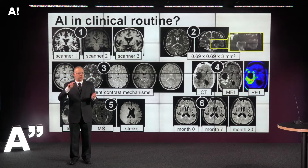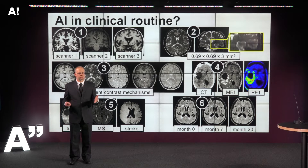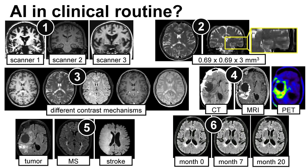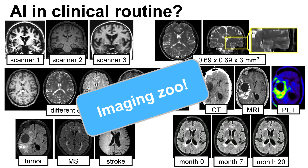There are lots of knobs you can turn in the scanner — image resolution in three different directions, different contrasts, different modalities. I already mentioned CT and MRI; there are also PET scans for functional information. Of course, these people are in hospitals so there are lots of different diseases going on. Some patients you've seen only once, some you've seen five times — there is a lot of variability. I call that the imaging zoo.